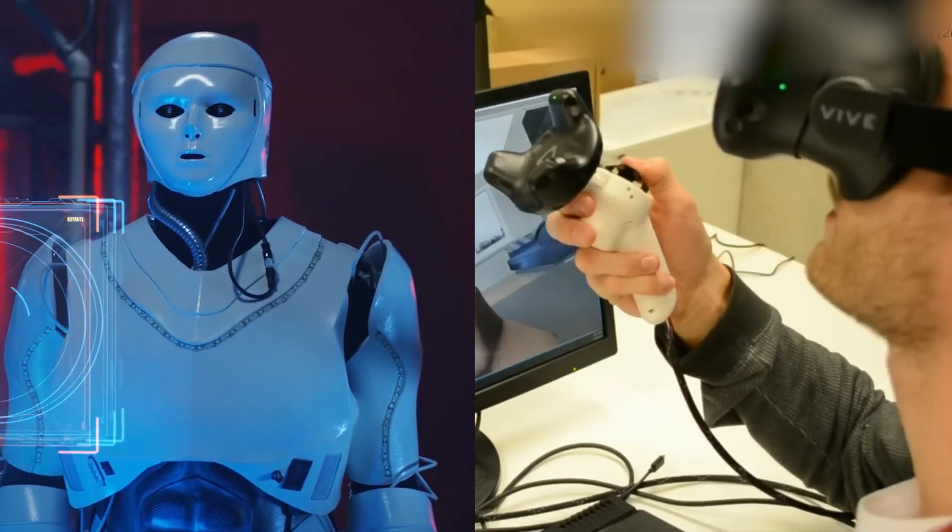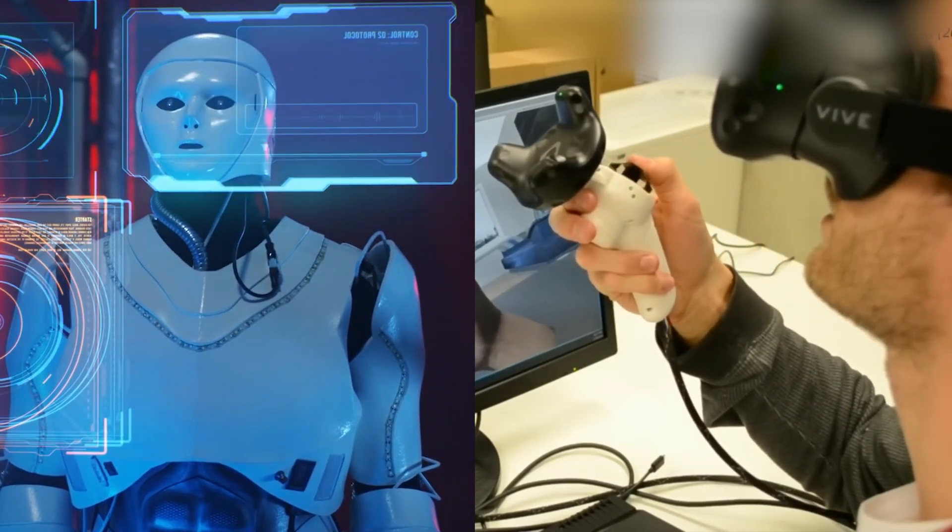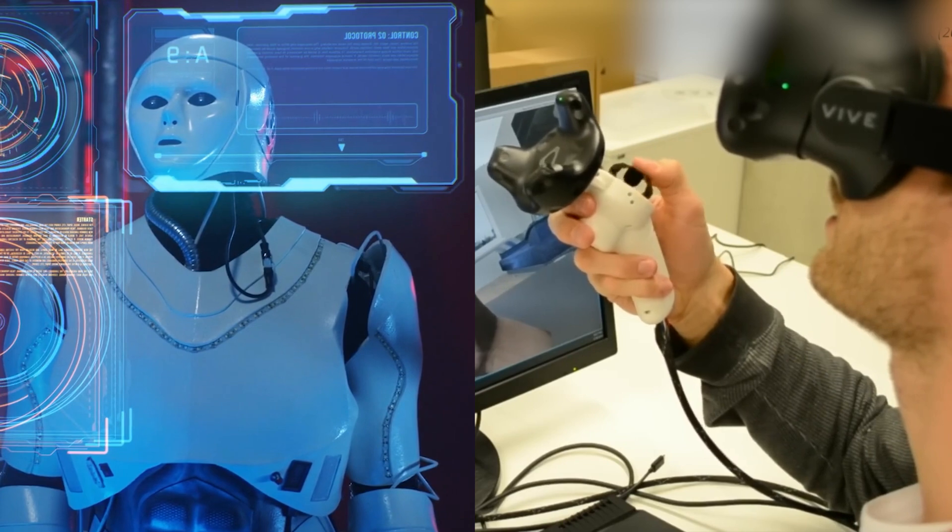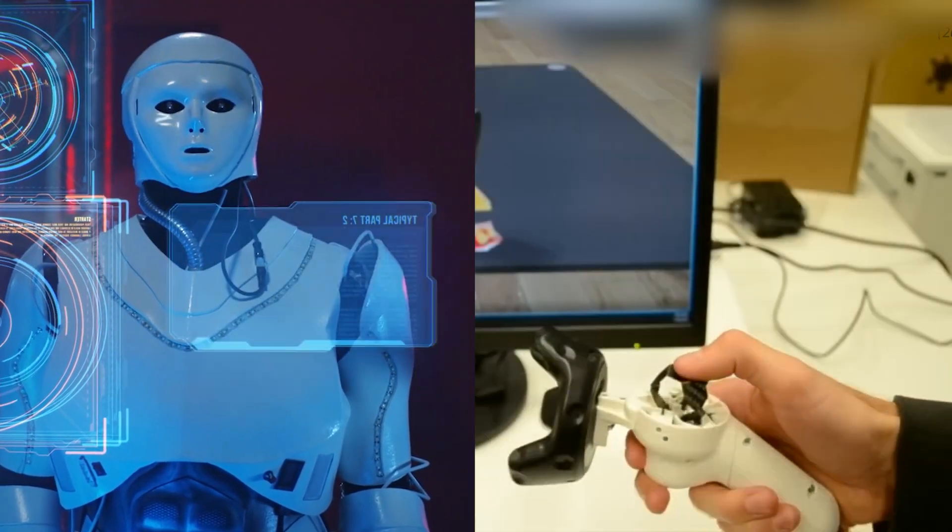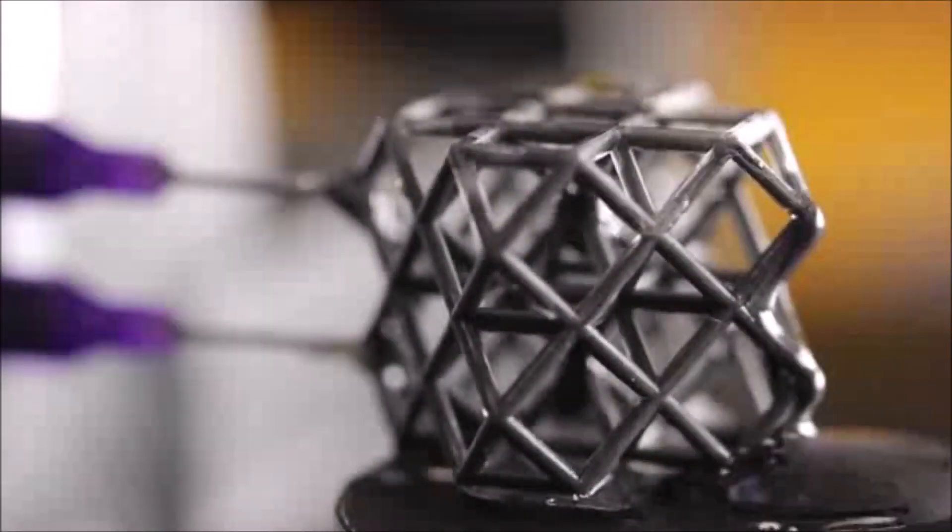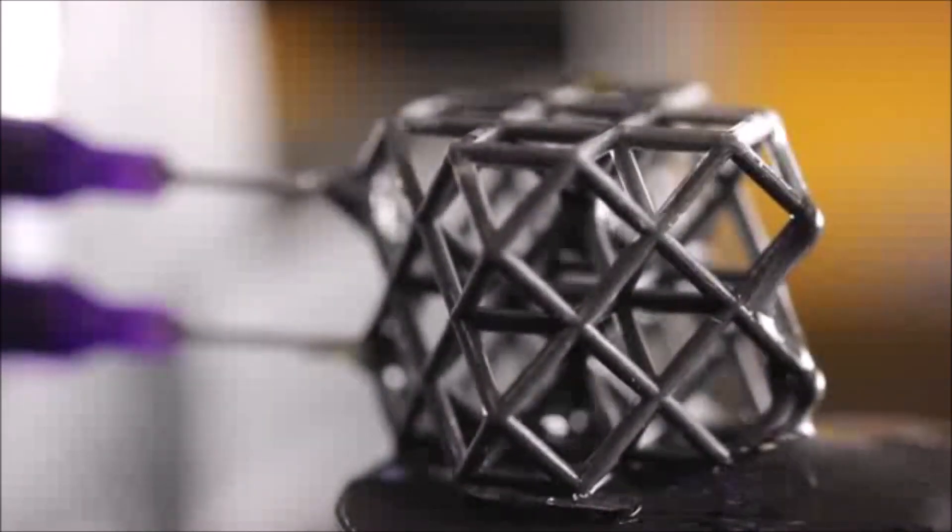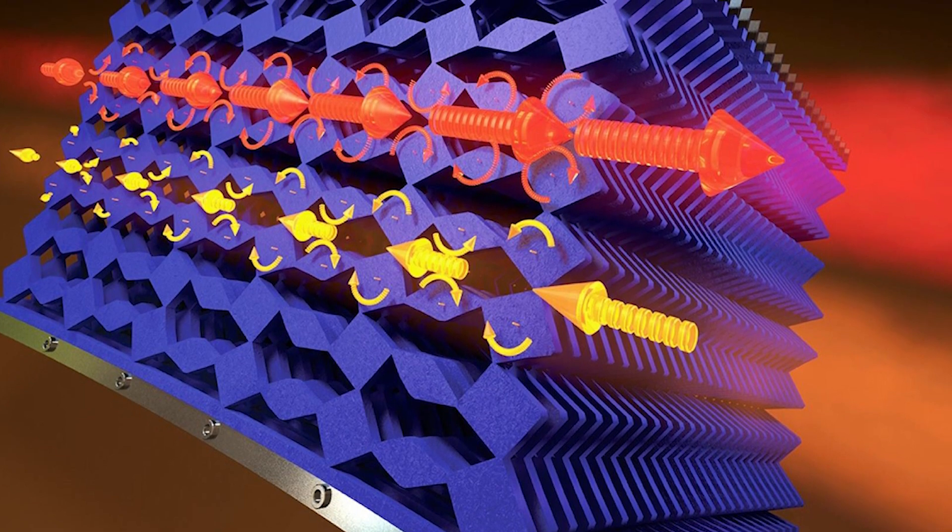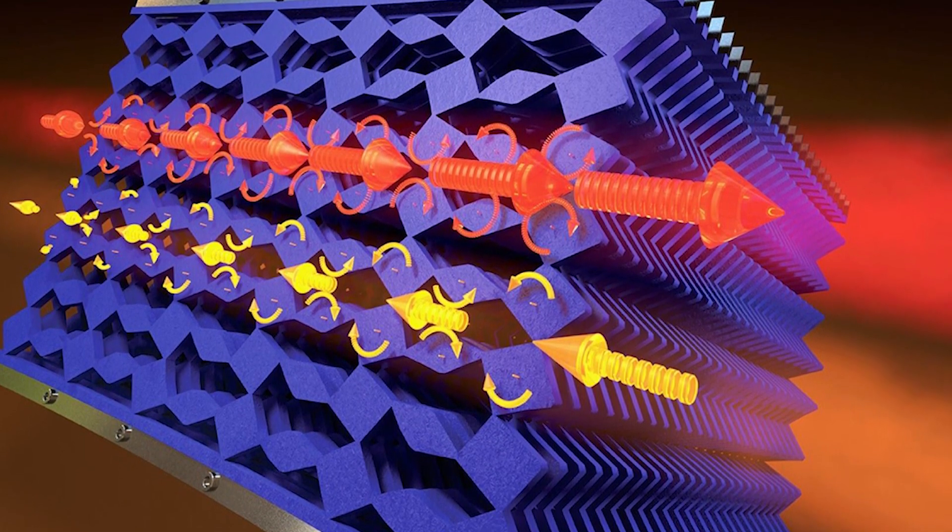Robots were machines. Complex, often bulky, and entirely separate from the materials they were built with. Metabots, on the other hand, flipped that script completely. Here, the material is the machine. There are no moving parts in the traditional sense. No internal power. No circuitry. Just shape, memory, and magnetic influence. And yet, they move. They twist. And they adapt.